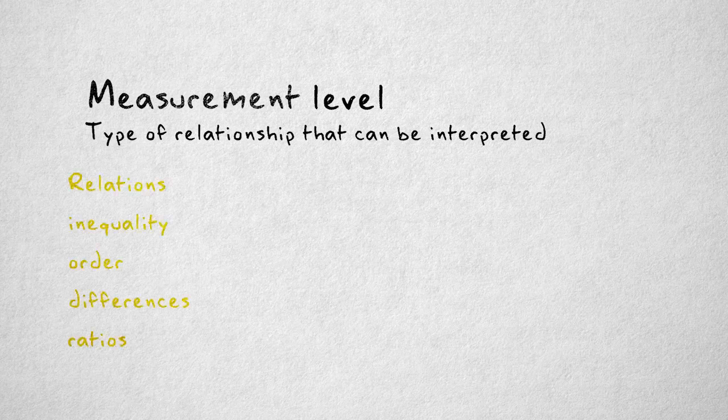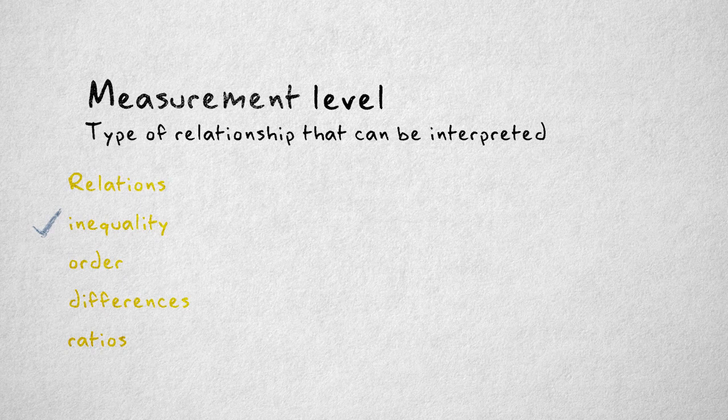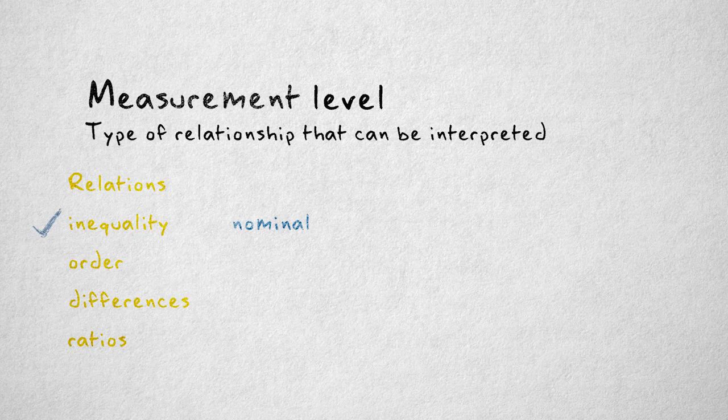If the only relation you can determine is that of inequality, distinguishing between values, then we call this a nominal variable. An instrument that can only differentiate between values is said to have a nominal measurement level.